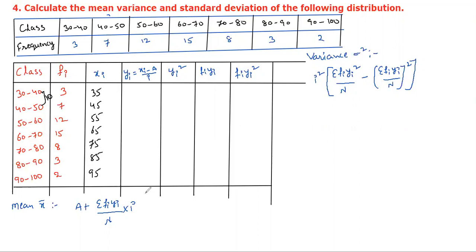To find yi, using a = 65 as the assumed mean: yi = (xi − 65) / 10. Setting 45−65= −2, giving yi values of: −2, −1, 0, 1, 2, 3. Then yi² values are: 4, 1, 0, 1, 4, 9, 16, 25.